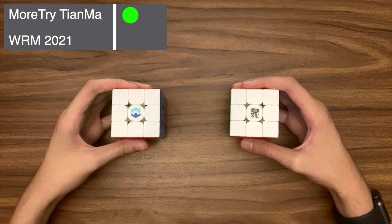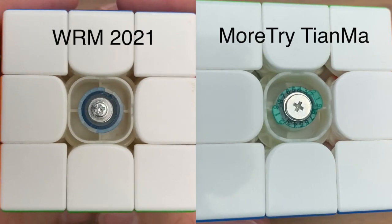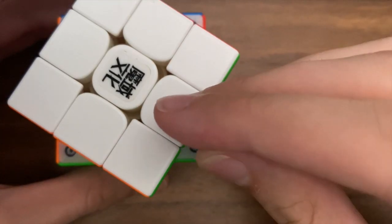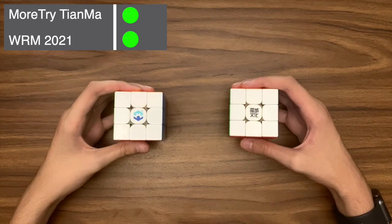Onto customization now. And whilst the tensioning system is near identical, the WRM wins this category due to the magnets being adjustable. Sadly, the Tyanmar doesn't have this. So at one all, we go into value for money.